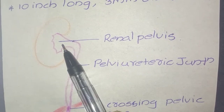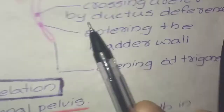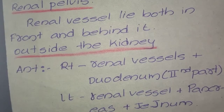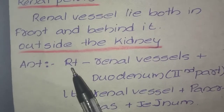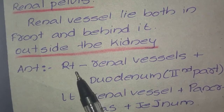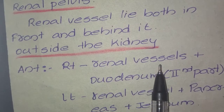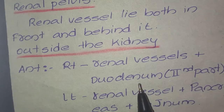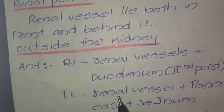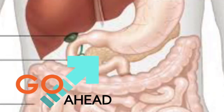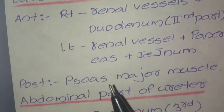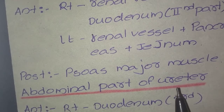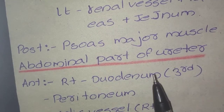Outside the kidney, the anterior and posterior relations are divided into right and left. On the right, the anterior relations are the right renal vessels and the second part of the duodenum. On the left, they are the renal vessels, pancreas, and jejunum. Posteriorly, it is the psoas major muscle.